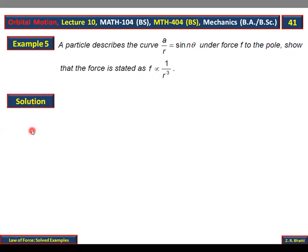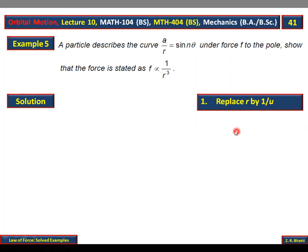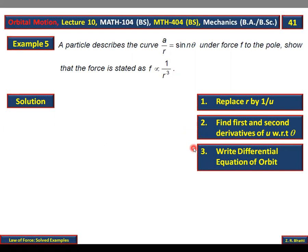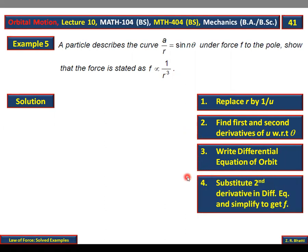Viewers, lecture number 9 aur 10 mein is kisim ki examples solve karne ke liye hum ne woh method discuss kiya hai. Mein aap ko dobara yaad kurwa jata hoon. Pehla step: replace r by one over u. Doosra step: first and second derivative maalum karna with respect to theta. Teesra step: differential equation of the orbit likhenge. Chautha step: differential equation of the orbit mein woh values put karke simplify karenge, aur yeh answer aa jayega.